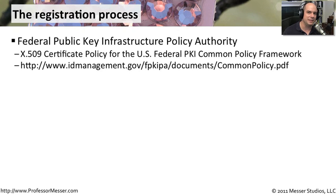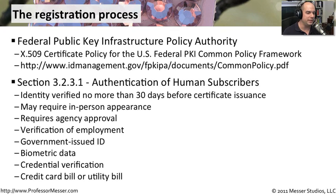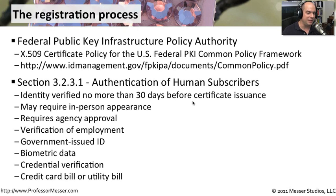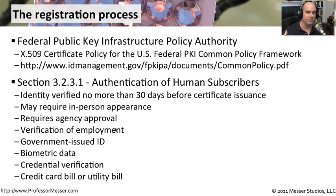If you start reading through this, there is a very interesting level of detail about what's involved. If you go to Section 3.2.3.1, the authentication of human subscribers, you can see what is required. You may have to have your identity verified no more than 30 days before a certificate is issued. You will need agency approval, and it may require an in-person appearance. You also have to have verification of employment and bring your government ID.